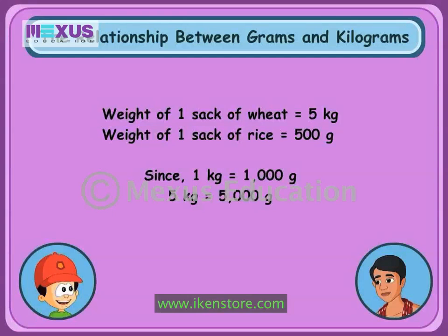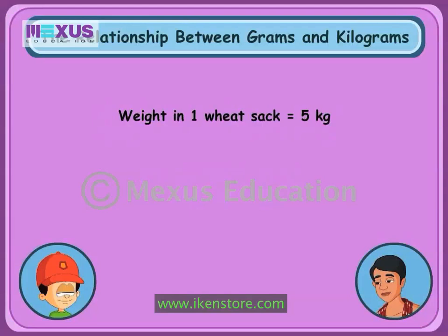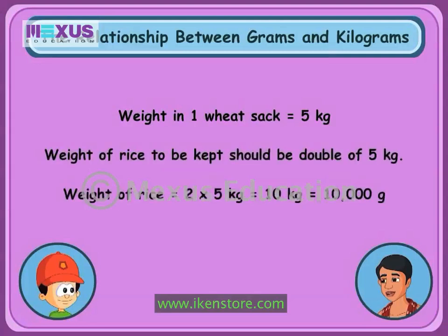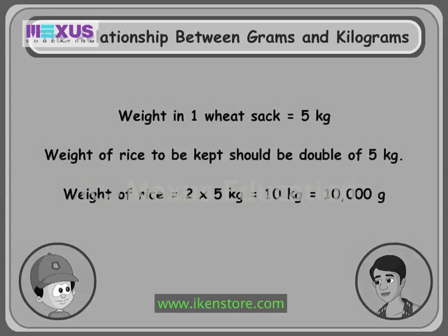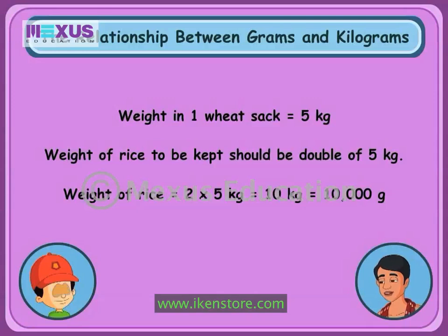So if we keep one sack of wheat, then what weight of rice will be kept along with it? J.C., if we keep one sack of wheat, then the weight of rice to be kept with it will be double the weight of wheat, which is equal to 2 multiplied by 5, that is 10 kilograms or 10,000 grams.